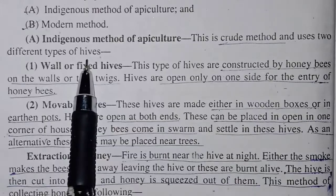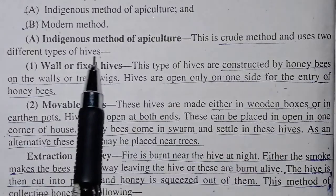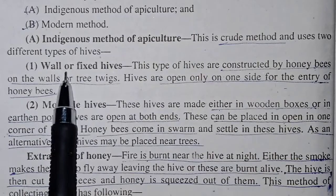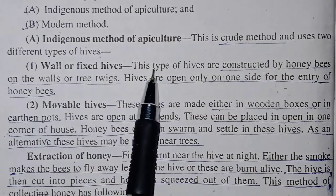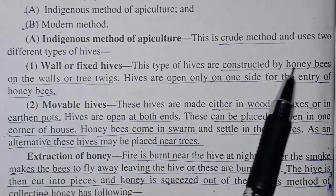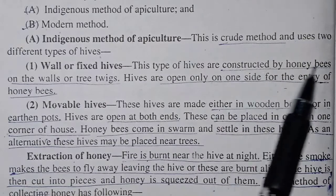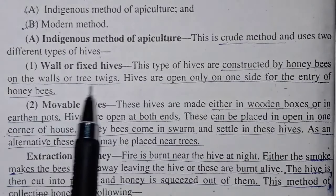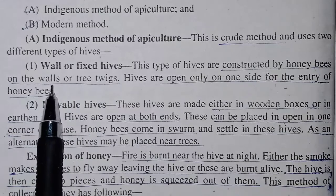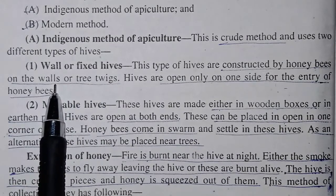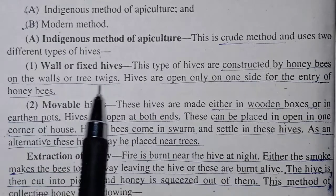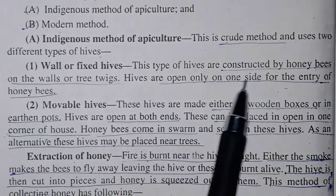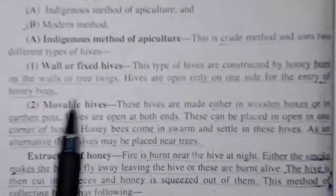We use two types of hives. Hive means the bee home. The first type is wall or fixed hives. This type of hive is constructed by honey bees on the wall or on a tree. Hives are open only on one side for the entry of honey bees.